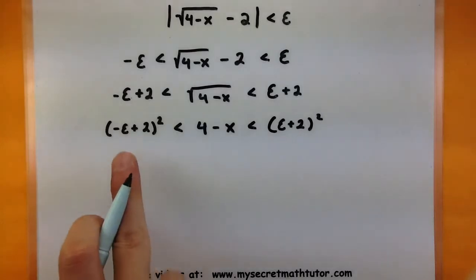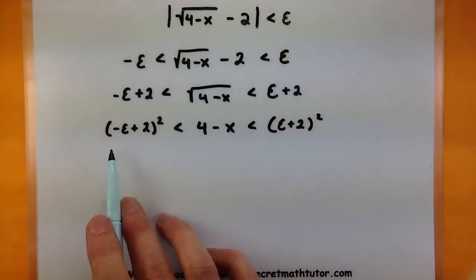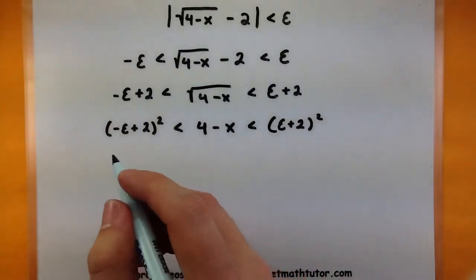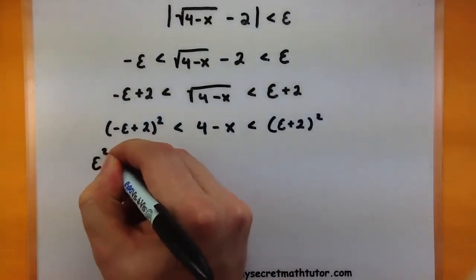Now, since I may be able to combine terms later on, it's probably a good idea to foil these out to see exactly what we get. So let's foil out this one, negative epsilon times negative epsilon would be epsilon squared.